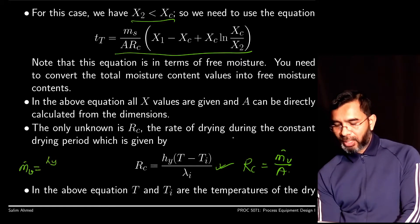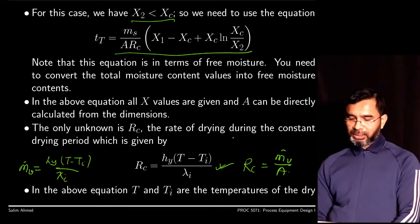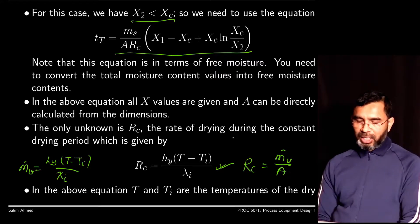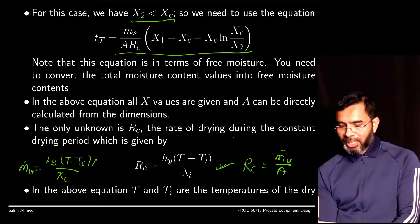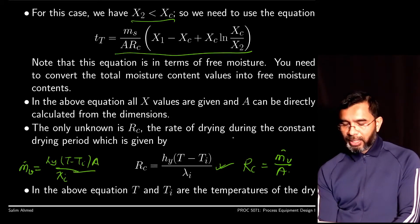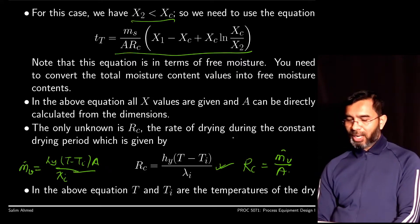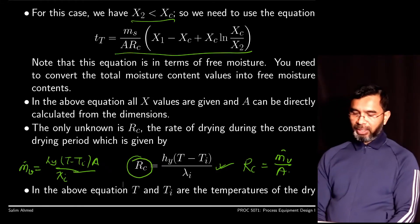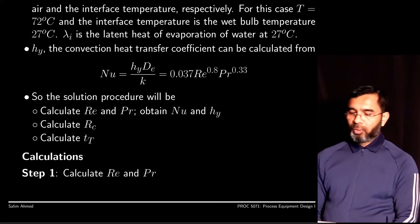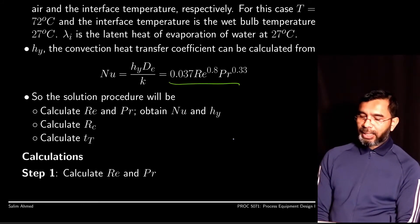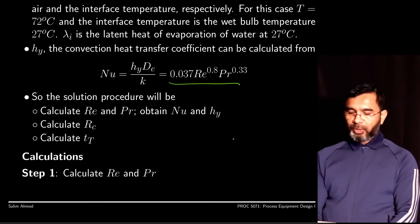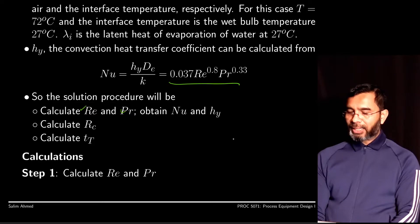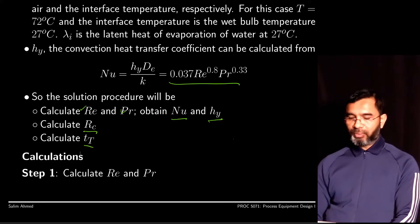To get hy, we use the heat transfer correlation requiring the Reynolds number and Prandtl number. The steps are: calculate the Reynolds number, from that get the Nusselt number, then obtain hy, calculate Rc, and finally calculate the drying time. The Reynolds number is defined as: Re = De·v·ρ / μ, where all properties are those of air and the equivalent diameter De is given.